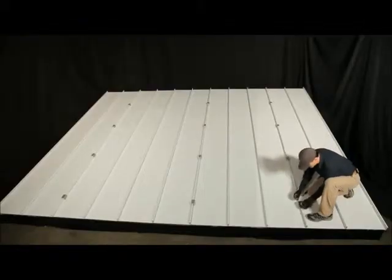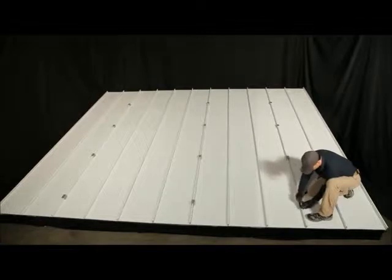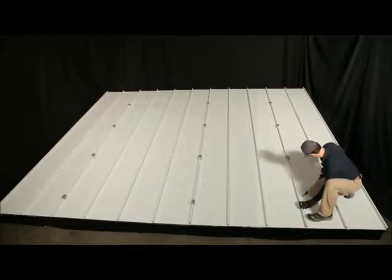After all the mounts have been secured, the front row leveling feet are installed. To install a leveling foot, place it squarely on the seam mount and secure it with a machine screw.